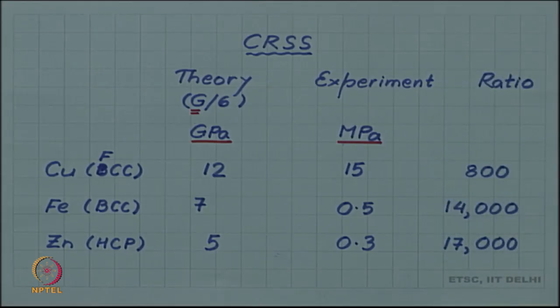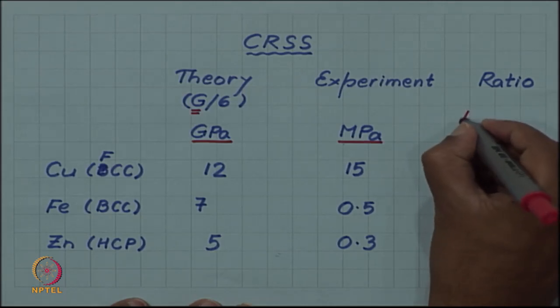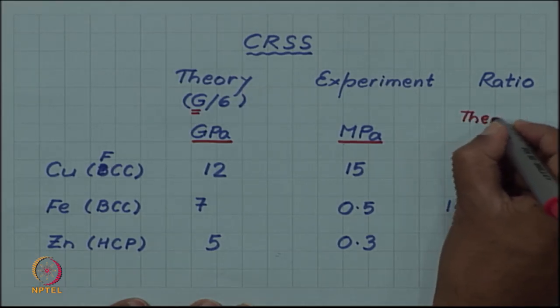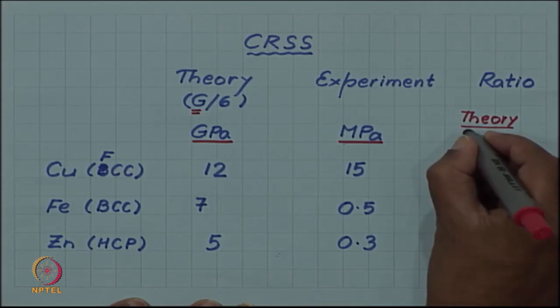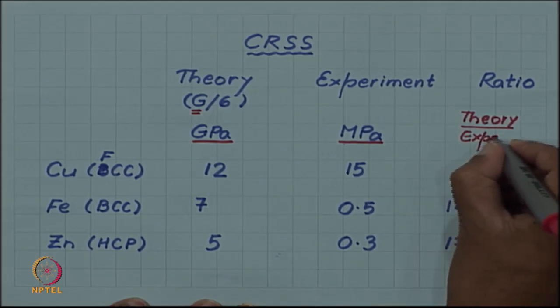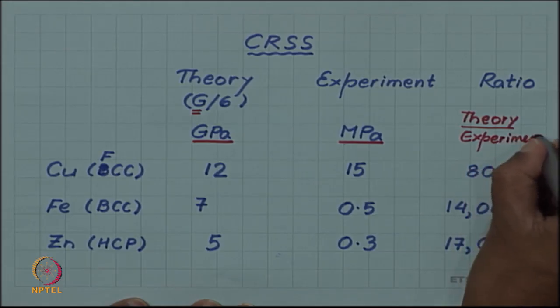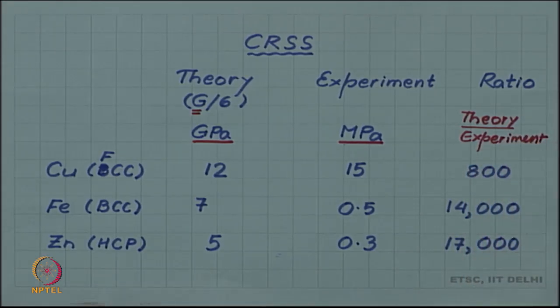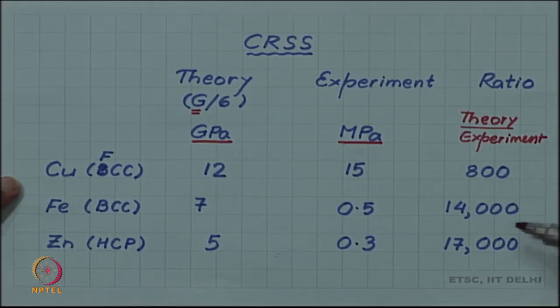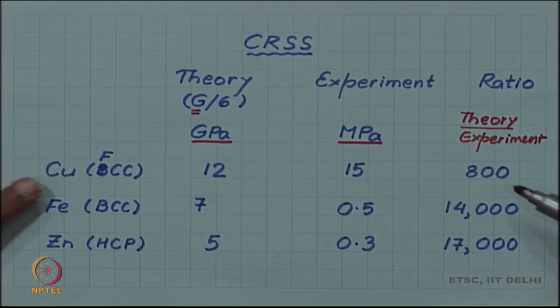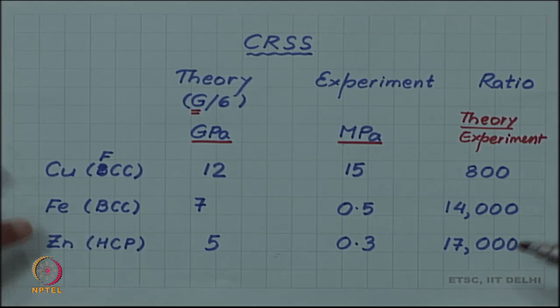So if we take the ratio, ratio of the theoretical value by the experimental value, then we get values like 800, 14,000, and 17,000, which means copper is 800 times weaker, real crystal of copper is 800 times weaker than what the theory is predicting for it. Iron is 14,000 times weaker than its theoretical prediction and zinc 17,000 times.